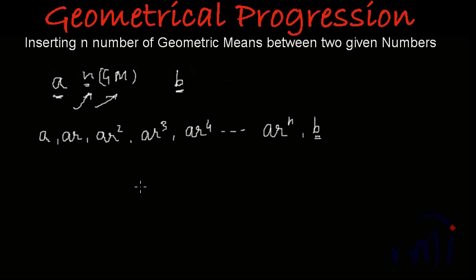b is the last term and if we are inserting n number of means between a and b, so the total number of terms will be n plus 2.